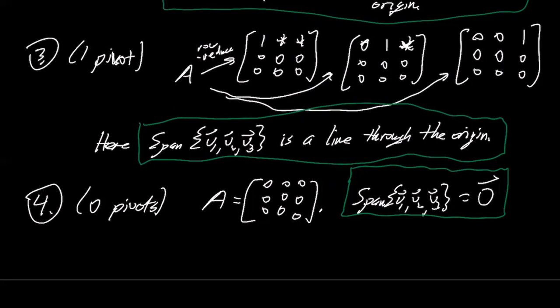which is this line. If you have two pivots, you get a two dimensional span, which is a plane. If you have no pivots, you get a zero dimensional span, which is just a point. And if you have three pivots, you get all of space, which is three dimensional.